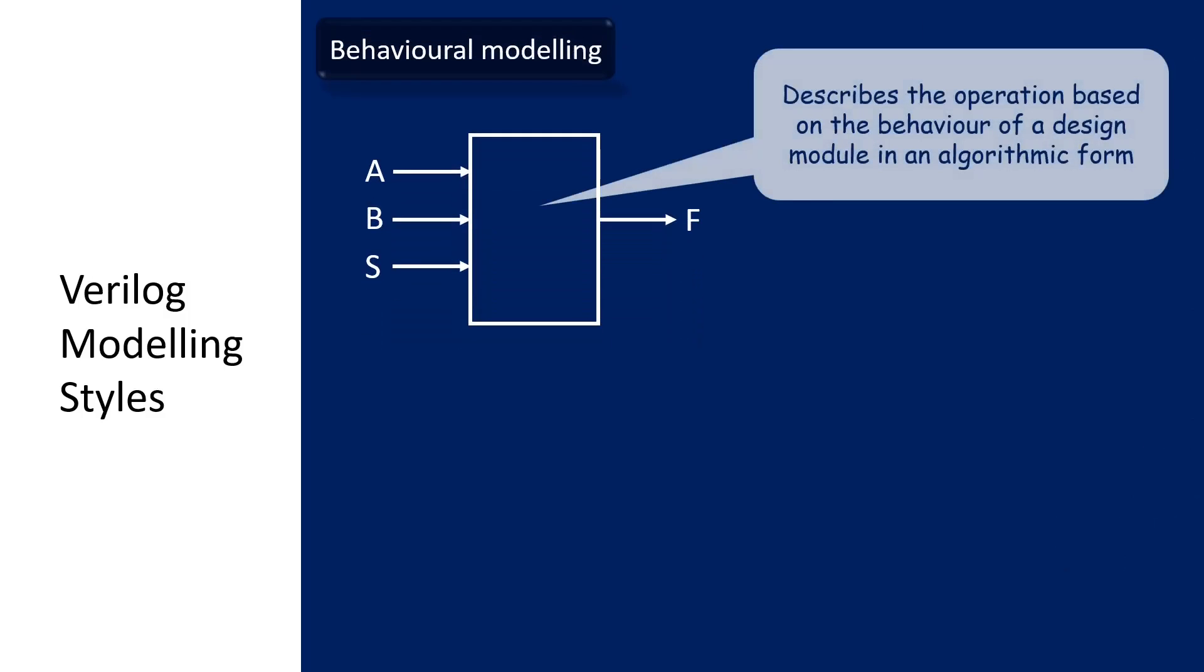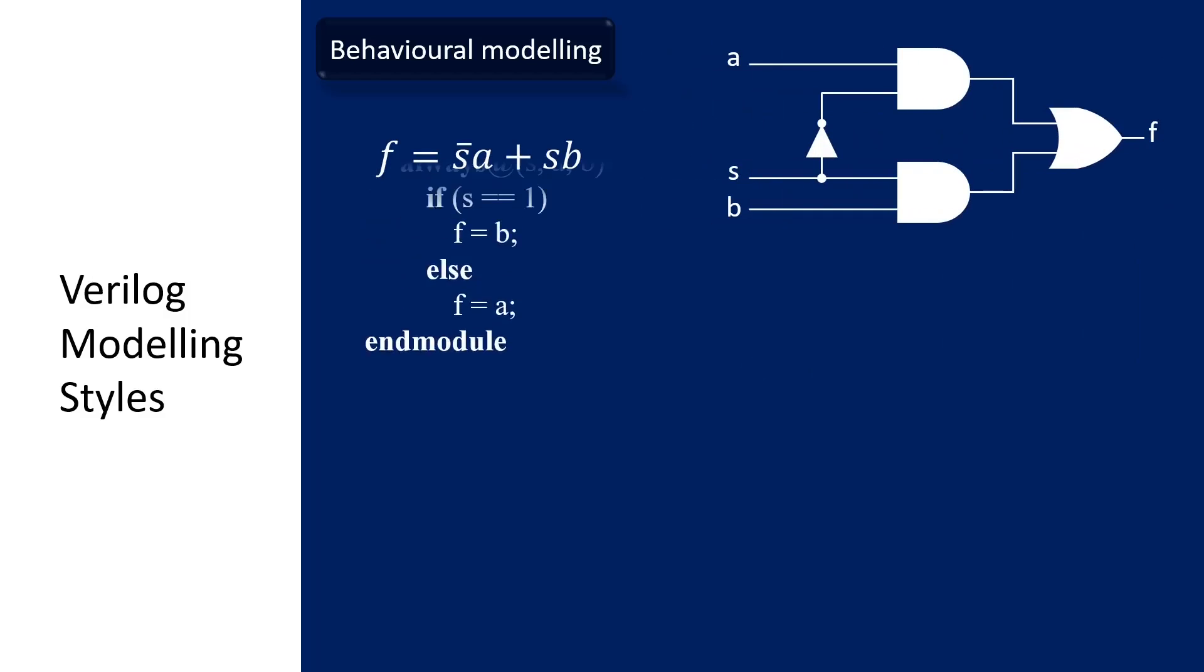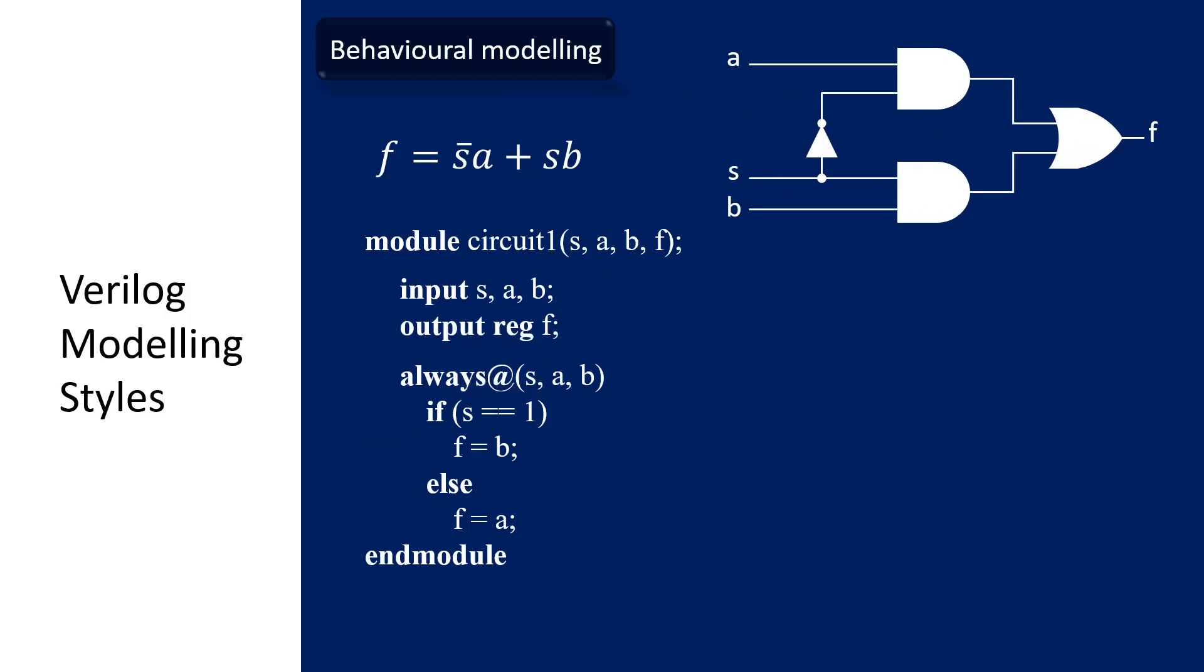In behavioral modeling, the code is used to describe or model the digital circuit based on the behavior of a design module in an algorithmic form. It uses the computer programming-aligned statements. For example, the if-else statement.